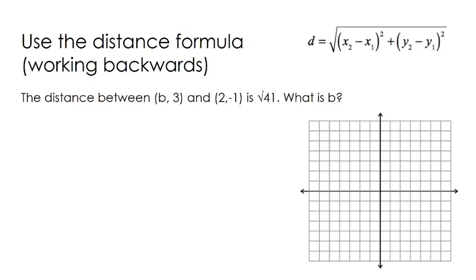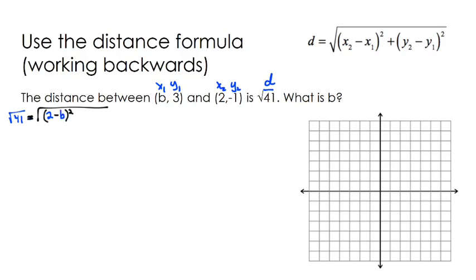This next one is really the same idea as the last problem — I'd encourage you to pause the video and try to work it out yourself, then hit play and see if you get what I get. I have x1, y1 and my second point x2, y2, and the distance is the square root of 41. Filling everything into the formula: the square root of 41 equals the square root of (2 minus b) squared plus (y2 minus y1), which is negative 1 minus 3, squared.